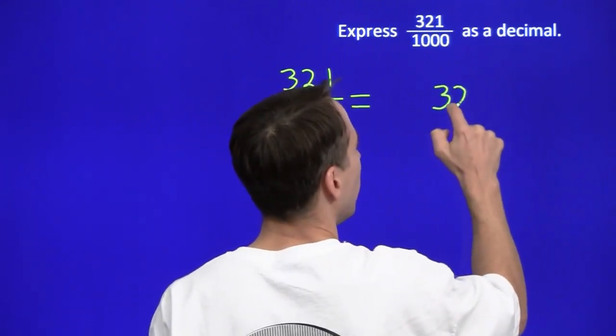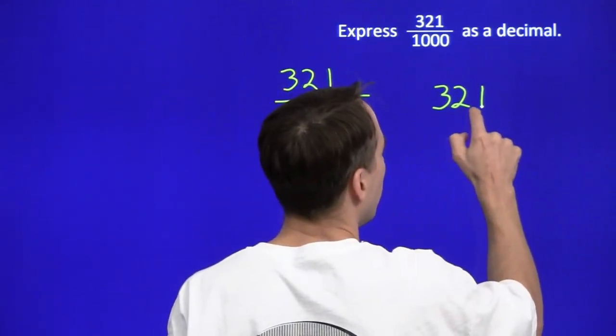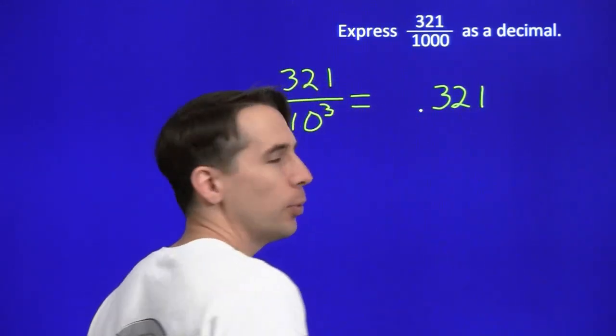That means we start with 321. We move the decimal point to the left once for each power of 10. We're dividing by 1, 2, 3. The decimal point is right there.